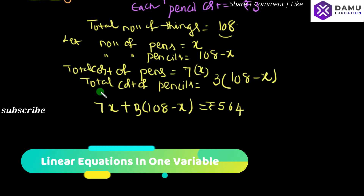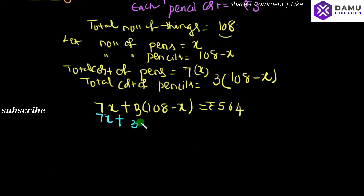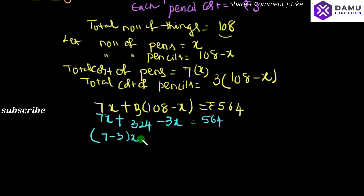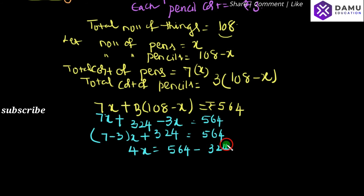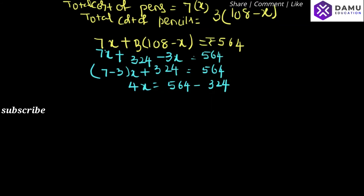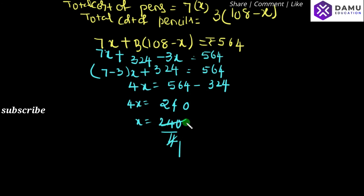Expanding: 7x plus 324 minus 3x equals 564. Simplifying: 4x plus 324 equals 564. Shifting 324 to the right side: 4x equals 564 minus 324, which is 240. Therefore x equals 240 divided by 4, which gives x equal to 60.